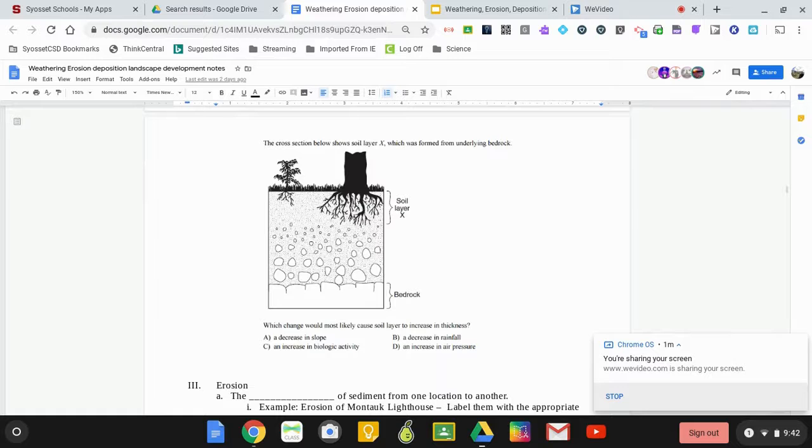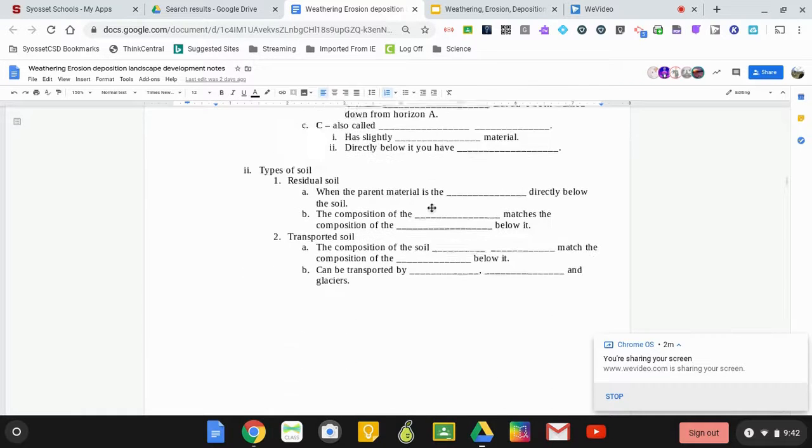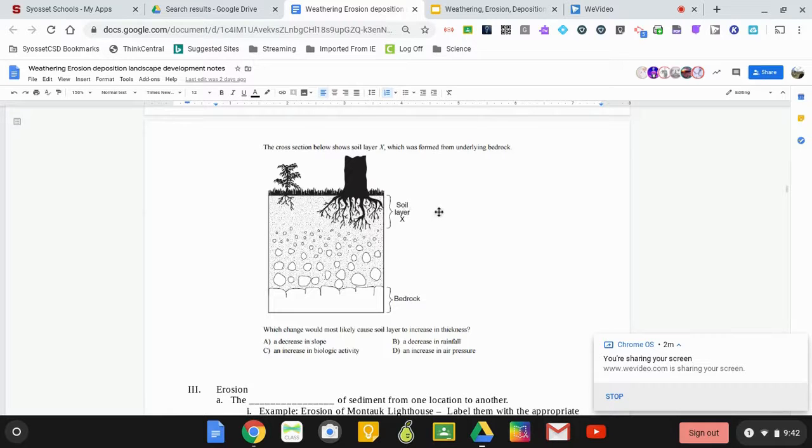Now that we have our layers labeled, let's take a look at the question here in the notes. Which changes would most likely cause soil layer X to increase in thickness? We want the soil layer X, which is our topsoil. You can see the plant roots come down here in our topsoil. We want to increase the thickness of it. Which one would increase the thickness of the topsoil, which contains organic matter? Should come up with answer C, an increase in biological activity. Biological activity could be animals. It could also be roots because plants break up rocks through the roots.